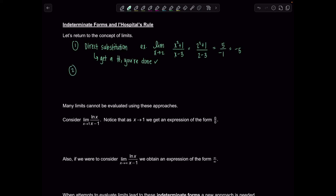The second scenario: you try direct substitution and instead you get some non-zero number in the numerator and 0 in the denominator. This is going to yield an infinite limit — either positive infinity, negative infinity, or it may not exist depending on how much information you're given. If you feel rusty on this one, I have a whole video dedicated to this topic linked in the description.